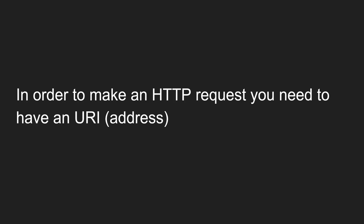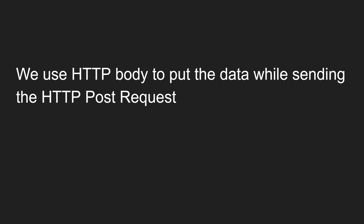In order to make an HTTP request, you need to have a URI — Uniform Resource Identifier — which is basically an address. Just like when you send a letter to a friend you need their address, when making a request to a server you need to know the server's address. That address is the URI or URL. We will learn more about URI in the next video.